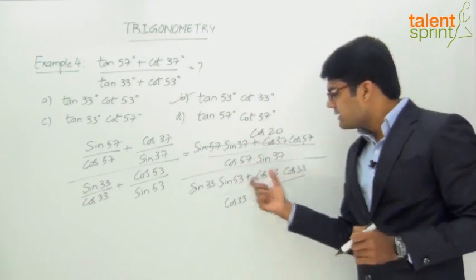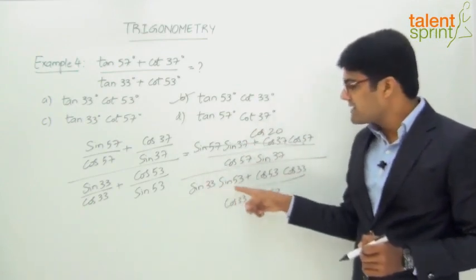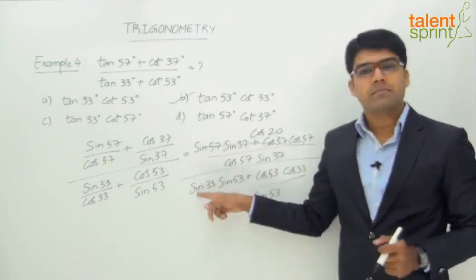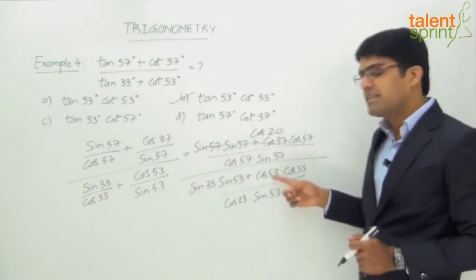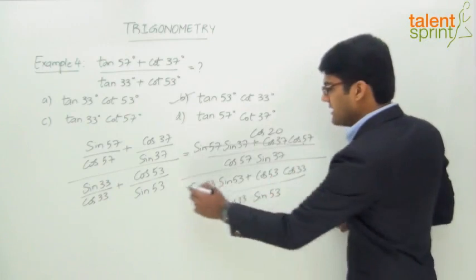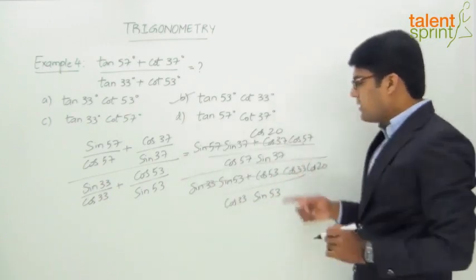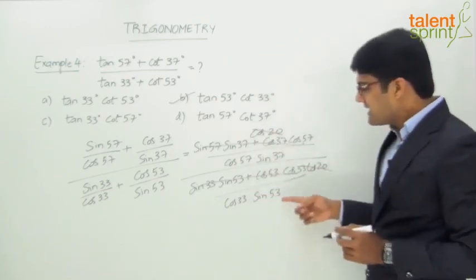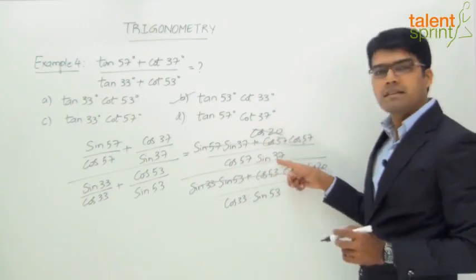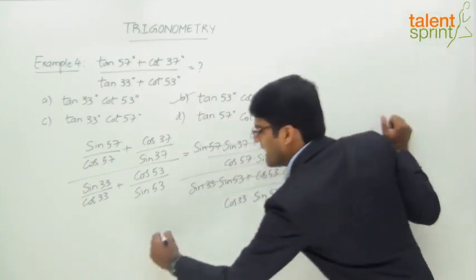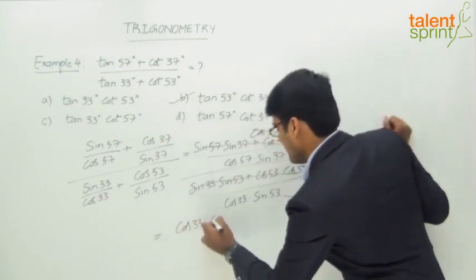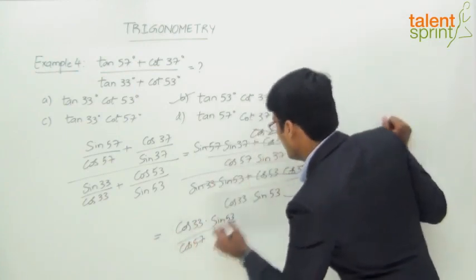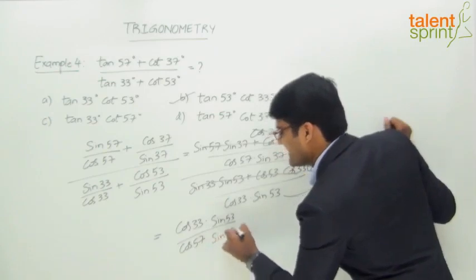Likewise, the numerator of the denominator — sin33·sin53 + cos53·cos33 — is again in the form cosA·cosB + sinA·sinB = cos(A - B), giving cos(53 - 33) = cos20. Both cos20 terms cancel out, leaving cos33·sin53 divided by cos57·sin37.